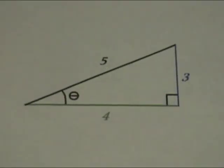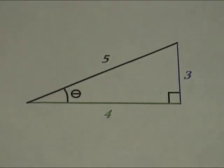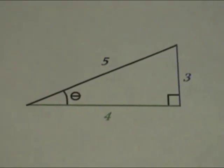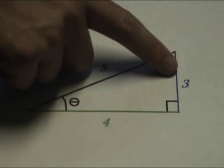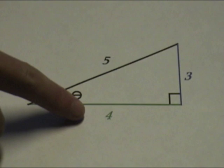An example of how to find the tangent of this angle would be: look for your angle, find the opposite side length, and put that over your adjacent side length to get your answer.